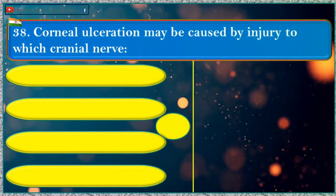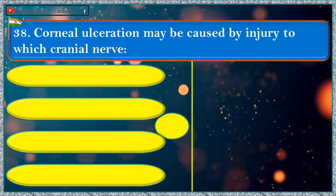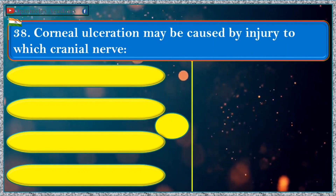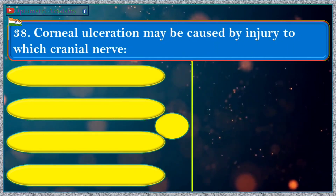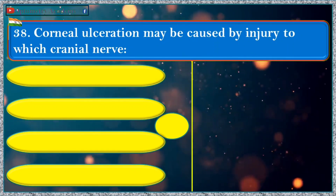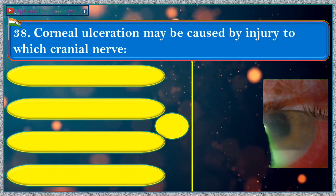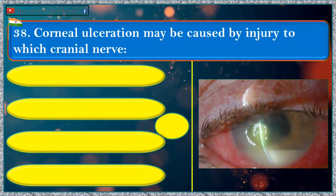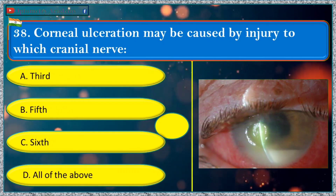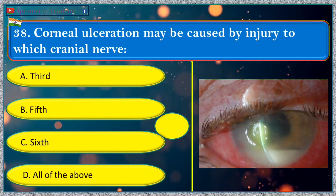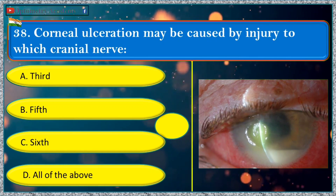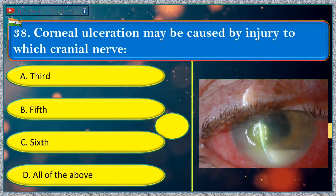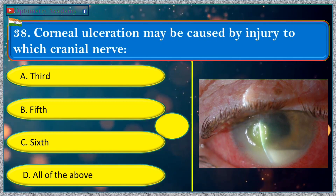Corneal ulceration may be caused by injury to which cranial nerve? a. third, b. fifth, c. sixth, d. all of the above.